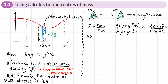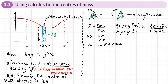Taking the limit as delta x tends to zero, the summation signs become integration signs and delta x becomes dx. Between limits a and b, x-bar equals the integral of rho x y dx divided by the integral of rho y dx. Since rho is a constant it cancels out, though I'll leave rho in my working and cancel it at the end. The denominator is simply the area of the 2D shape times rho.